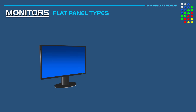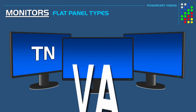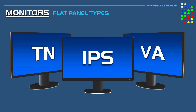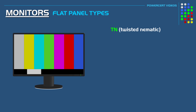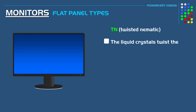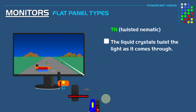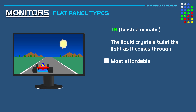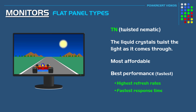LCD and LED monitors will have three different types of flat panels: TN, VA, and IPS, which vary in performance, color reproduction, and price. The first is TN, which stands for twisted nematic. This type works by liquid crystals twisting the light as it passes through. TN is the oldest of the three, making it the most affordable, but it also offers the best performance with the highest refresh rates and fastest response time, which makes it ideal for gaming.